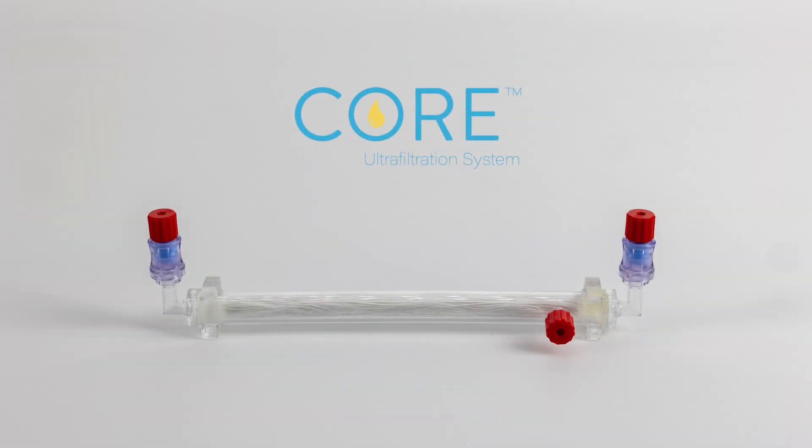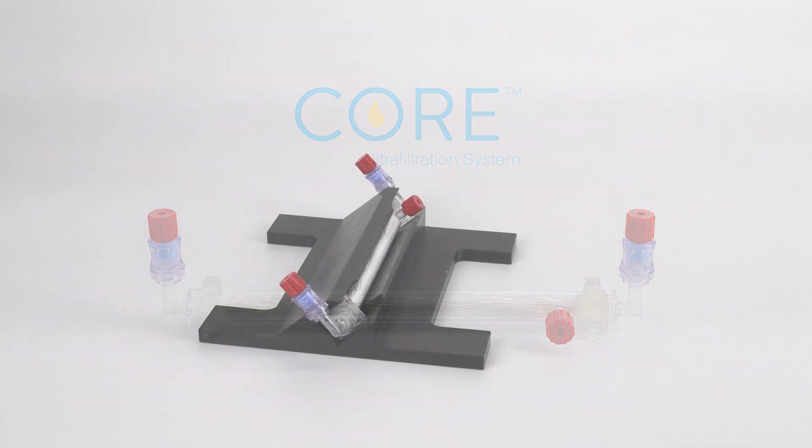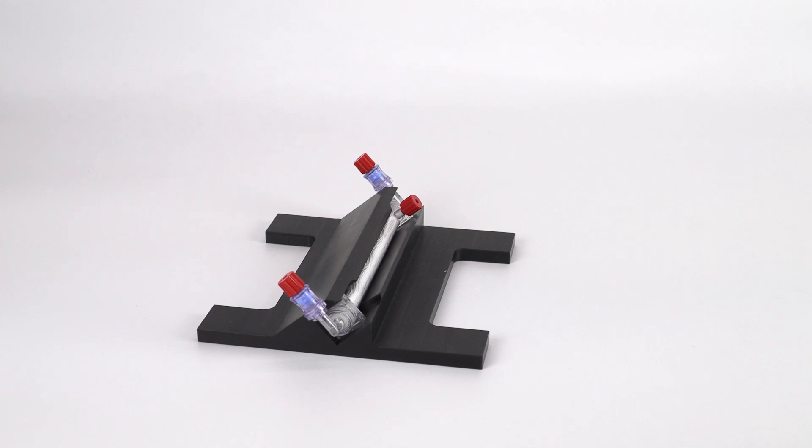The core ultrafiltration system is used to concentrate the proteins in the plasma solution. To begin, place the core ultrafiltration device into its processing base. Remove the red vented cap on either end port and attach the hydrophobic filter.